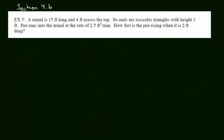Moving on to Example 5. Please pardon the crudeness of this example, as it was based on a childhood experience at an Eagles versus Redskins football game. Anyway, we have a urinal that's 15 feet long and 4 feet across the top. Its ends are isosceles triangles with height 3 feet. Pee runs into the urinal at a rate of 2.5 feet cubed per minute.